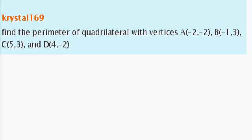We have another problem here and it says: find the perimeter of a quadrilateral with vertices A (negative 2, negative 2), B (negative 1 and 3), C (5 and 3), and D (4 and negative 2).